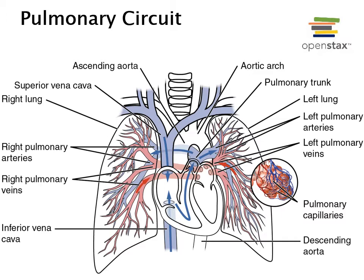The pulmonary circuit consists of the blood vessels that carry blood to and from the lungs, starting with the pulmonary trunk, which receives blood coming from the right ventricle. The pulmonary trunk branches into the left pulmonary artery and the right pulmonary artery. The left pulmonary artery carries blood into the left lung and the right pulmonary artery carries blood into the right lung. The pulmonary arteries branch into many smaller arteries within the lungs and eventually deliver blood into the pulmonary capillaries.